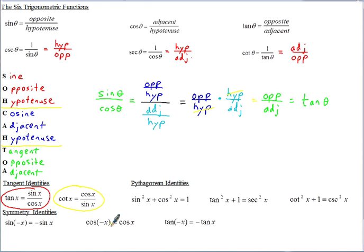And then some of the Pythagorean identities: sine squared plus cosine squared equals one; tangent squared plus one equals secant squared; and cotangent squared plus one equals cosecant squared. These all come from the Pythagorean theorem combined with these trig functions.